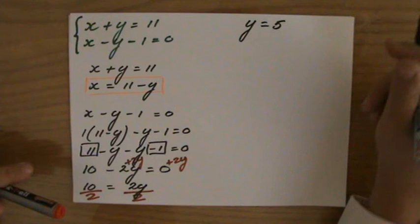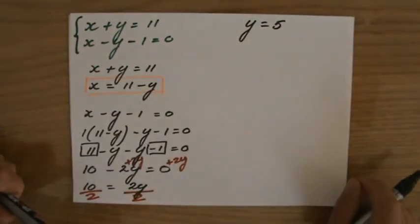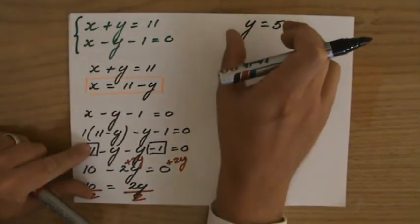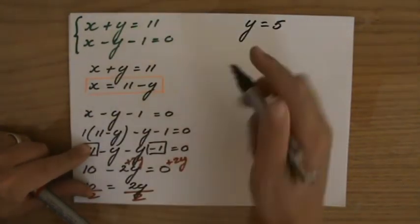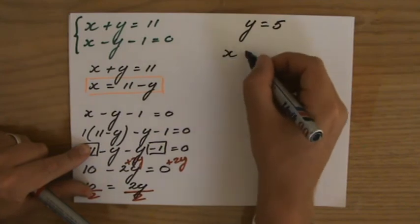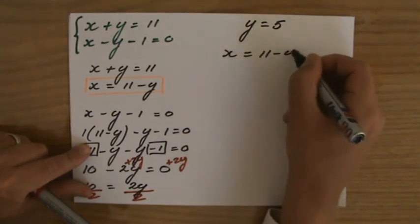I found the value of y. I'm not finished yet. I've got to find the value of x. And I do that by substituting that value in one of the equations. I always use that one because it's already rearranged. x is already the subject.